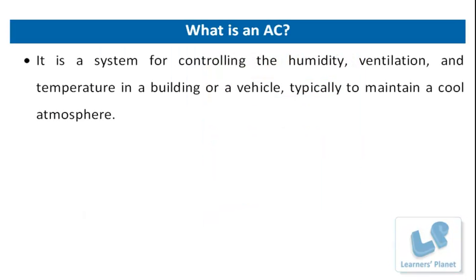Before stepping on to the working of an AC, I would like to tell you what is actually meant by an AC. It is a system of controlling the humidity, ventilation, and temperature in a building or a vehicle, typically to maintain a cool atmosphere. Basically, air conditioning is the process of altering the properties of air — primarily the temperature, humidity, and ventilation — to more favorable conditions. More generally, air conditioning can refer to any form of technological cooling, heating, ventilation, or disinfection that modifies the condition of air.